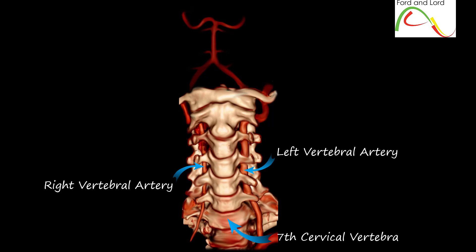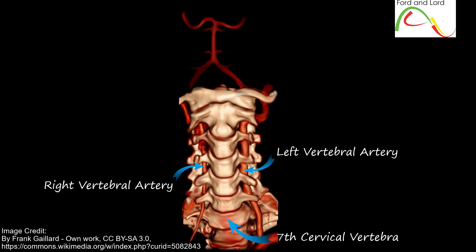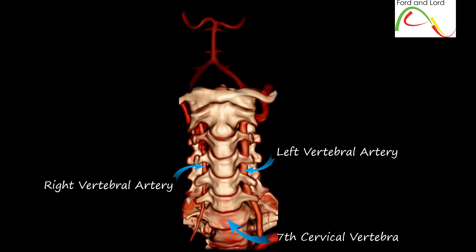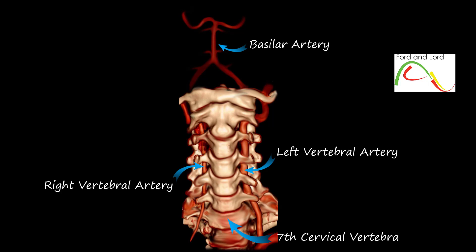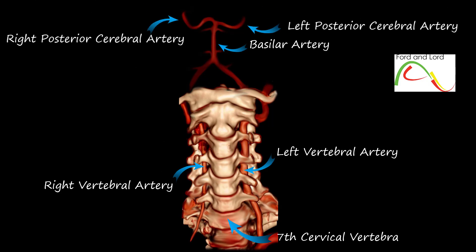As shown in this 3D reconstructed CT angiography image, both vertebral arteries merge soon after entering the skull to form a single artery known as the basilar artery. This is often referred to as the vertebro-basilar vascular system. The vertebral arteries supply blood to the upper spinal cord, brain stem, cerebellum, and the posterior part of the brain. The basilar artery bifurcates into two posterior cerebral arteries that contribute to the circle of Willis.